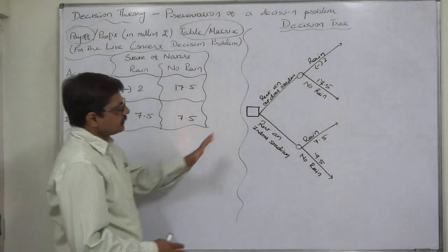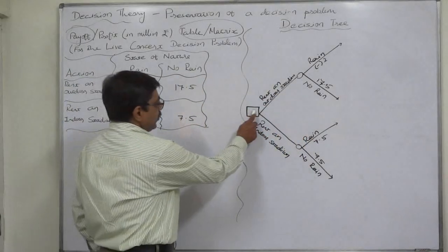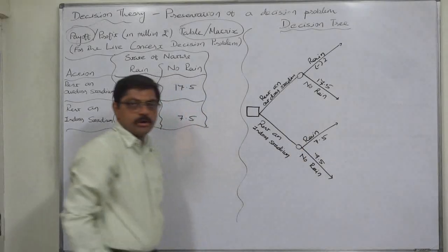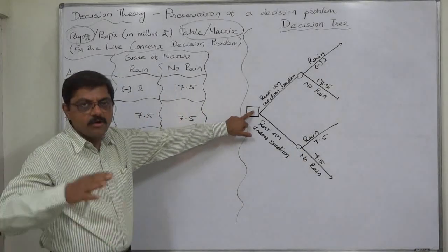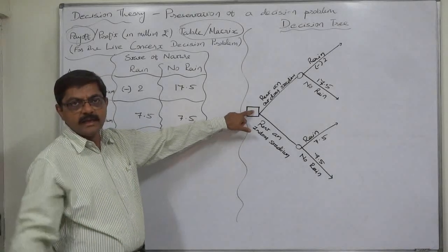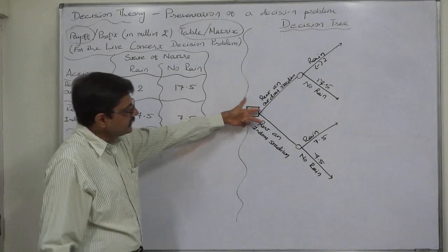It looks like a tree grown from a wall. This is called square node and these are called circular nodes. The square node is a starting point and from square node the two branches are the possible alternatives.